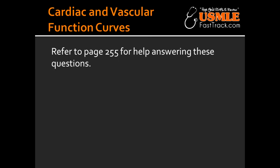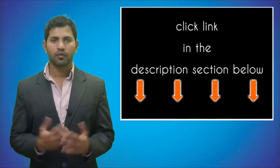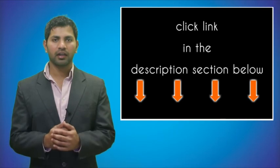What does number 5 represent in this picture? Number 5 represents the x-intercept of the venous return curve, which is the mean systemic filling pressure. For more information on this topic, click on the link in the description section below.